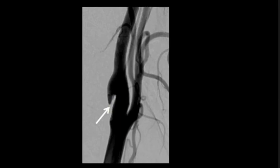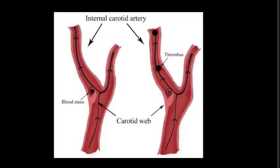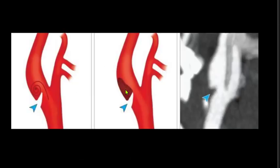Here on these images we can see there is stasis of the contrast on late images, which means this stasis will lead to clot formation and emboli leading to stroke. Here we have a schematic diagram where we can see there is stasis of the blood distal to the web leading to clot formation and stroke.